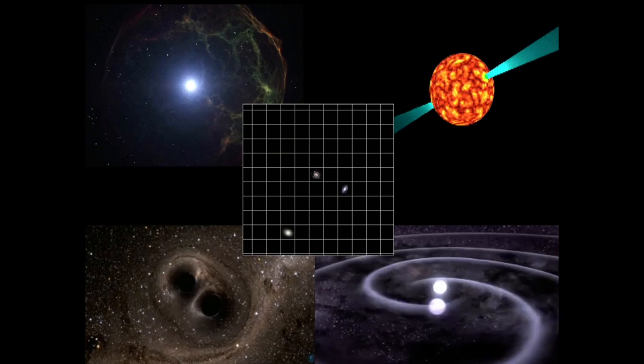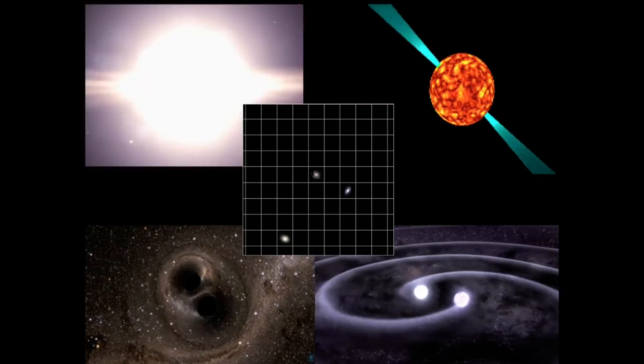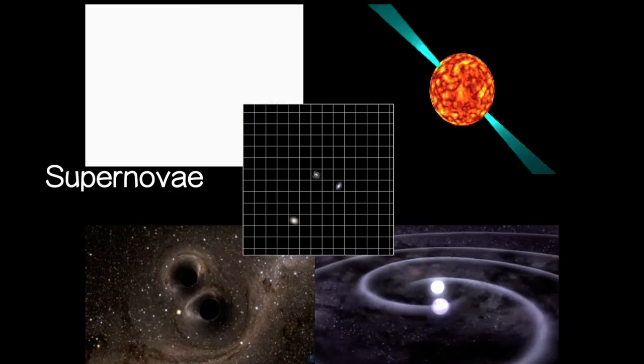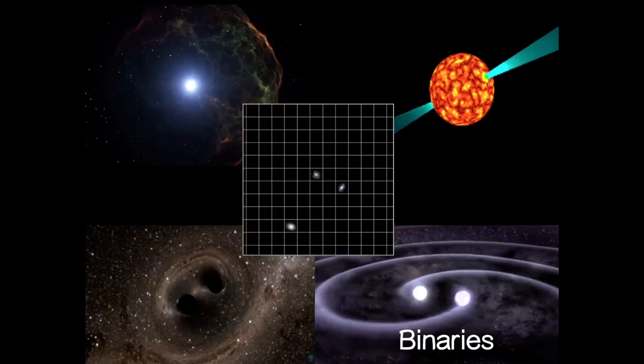The first gravitational wave ever detected came from the collision of two black holes. Gravitational waves are also formed from supernovae, rotating neutron stars, binaries or inflation.